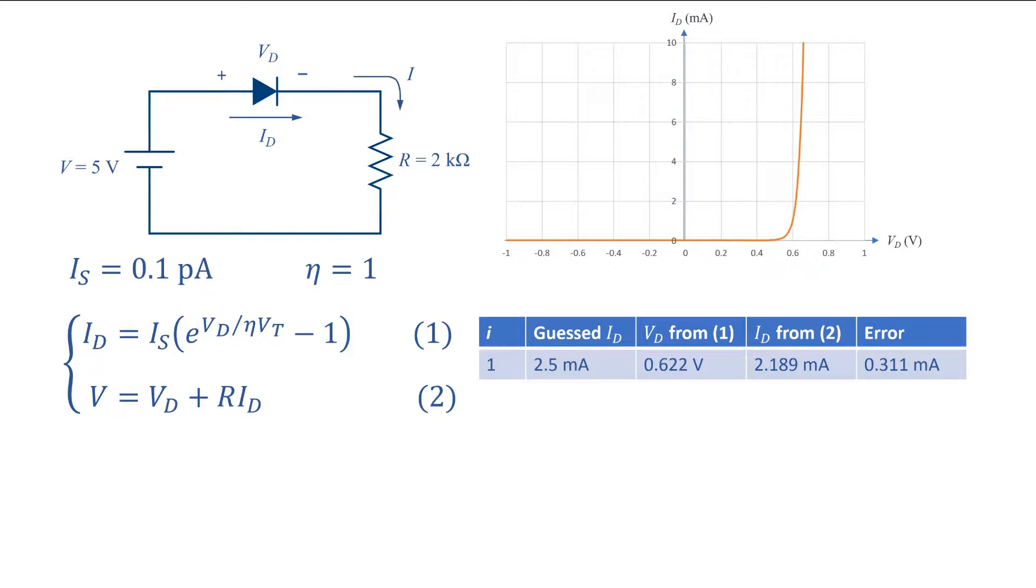You can choose how many significant digits you want after the decimal point, depending on the accuracy you want. I have used 3 digits. Then I have applied the value of vd into equation 2 and have found the value of id which is slightly smaller than my initial guess with error of 0.311 mA. So we know that the exact value is smaller than my initial guess.